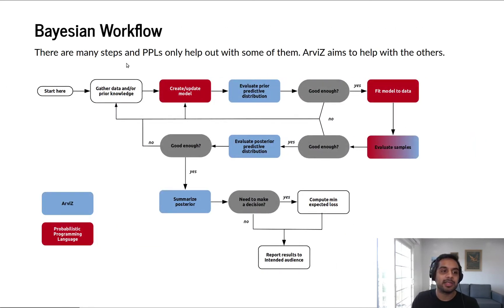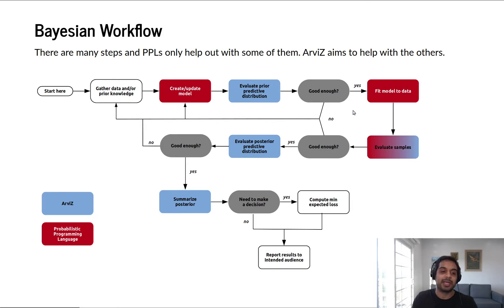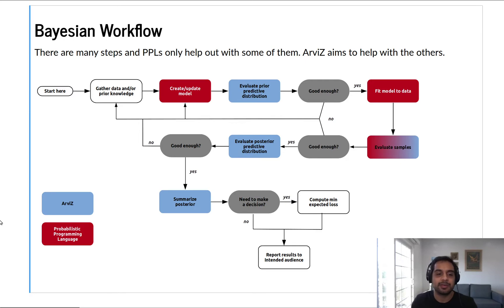The Bayesian workflow is more than just specifying a model and running inference. Certainly those are the most notable components. You can use Stan to create or define a model, and you can also use Stan to perform inference with the No-U-Turn sampler or any one of the MCMC samplers to generate samples. But just defining a model and generating samples doesn't constitute everything that could be needed in a full workflow. ArviZ fits in for the other things — evaluating prior predictive distributions, providing out-of-sampler diagnostics, and helping you summarize the posterior. ArviZ is really meant to be a complement to whatever PPL you happen to be using.